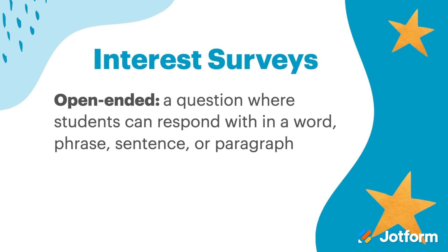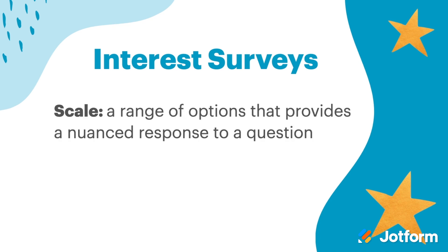An interest survey might include a collection of open-ended questions, where students can respond with a word, phrase, sentence, or paragraph. You might also include scales where there are a range of options that provide a more nuanced response to a question — for example, kids can say how they feel about something on a scale of 1 to 5 or 1 to 10. A scale or even a multiple choice question can help kids who might feel intimidated by an open-ended question. If they're a little hesitant to share, you might get more actionable information with a scale, multiple choice, or even some checkboxes.